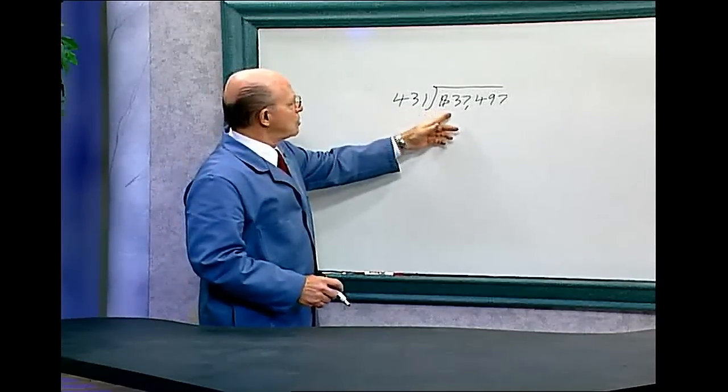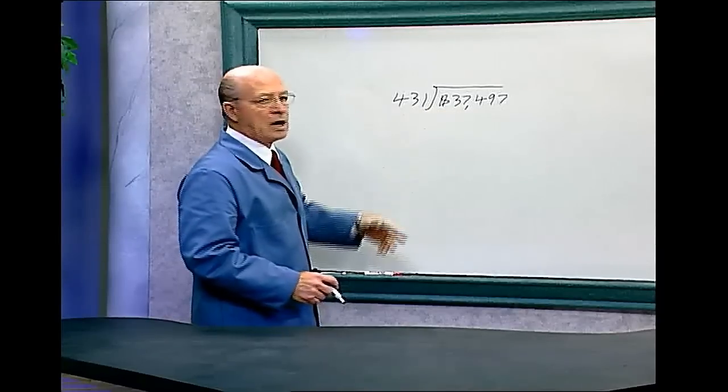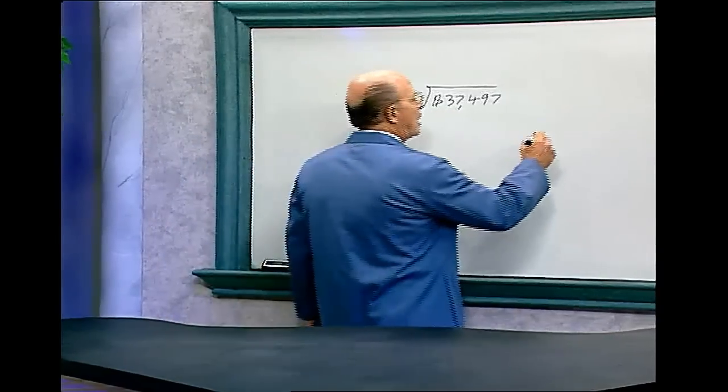Divide $37,497 by 431. So 4 goes into 37, we know it will go 9 times. 9 times 4 is 36, let's try 9.